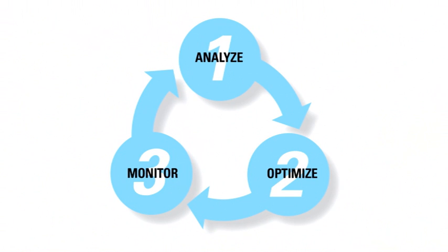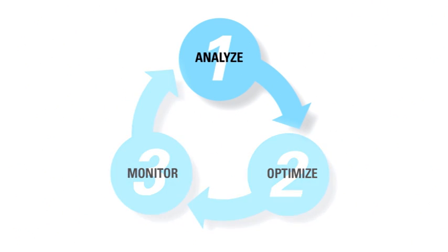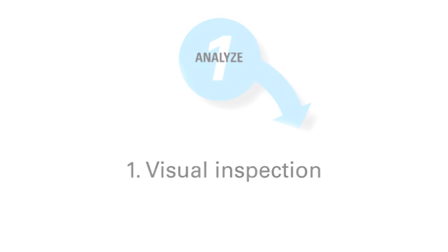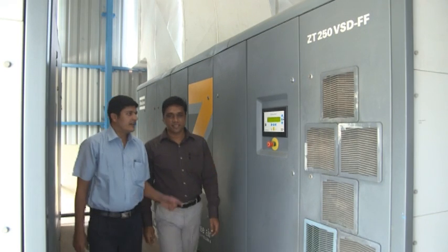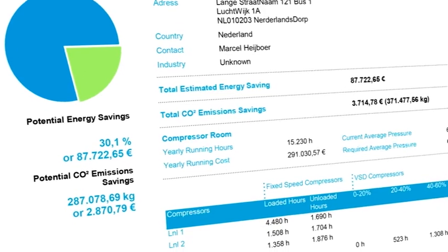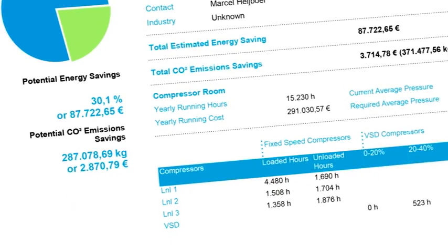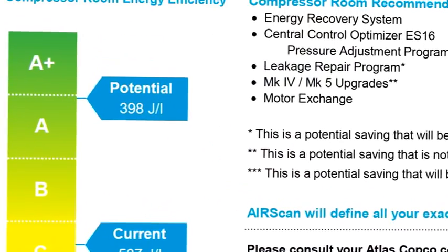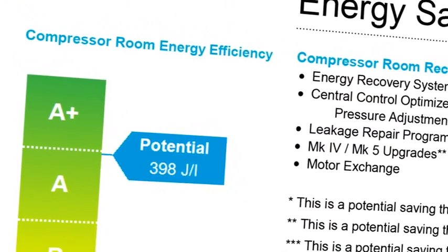The first step to optimize the compressed air system is to analyze the actual situation, typically done in two sub-steps. Visual inspection is the first sub-step. By looking at load patterns, the pipe work, the receiver size and so on, we detect weak points in the installation and define potential areas of improvement. Already during a first inspection visit, our calculation tools, such as the energy potential calculator, enable us to estimate the potential savings.